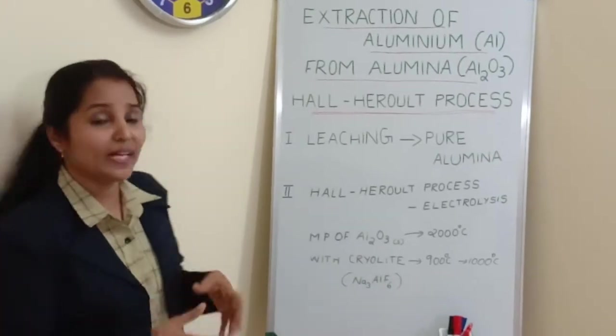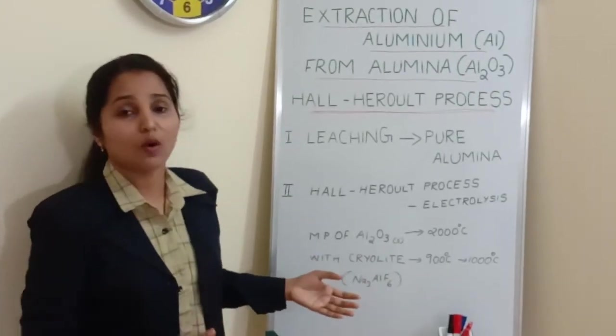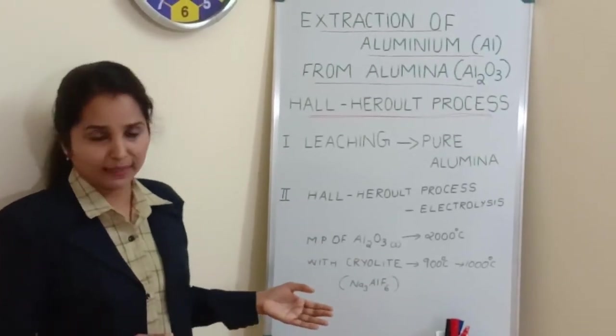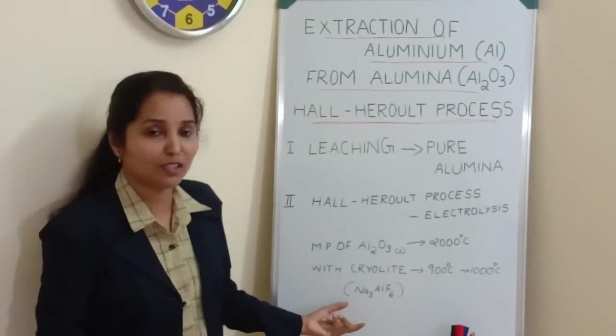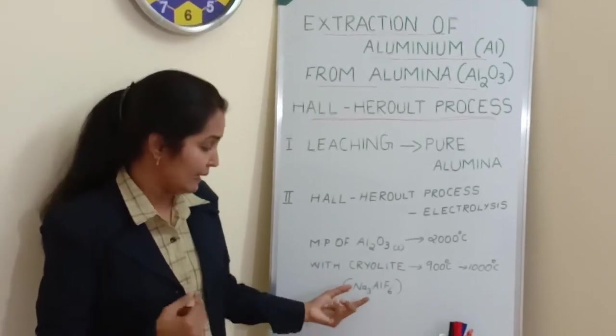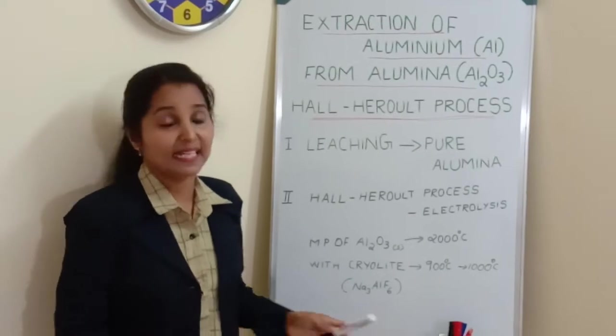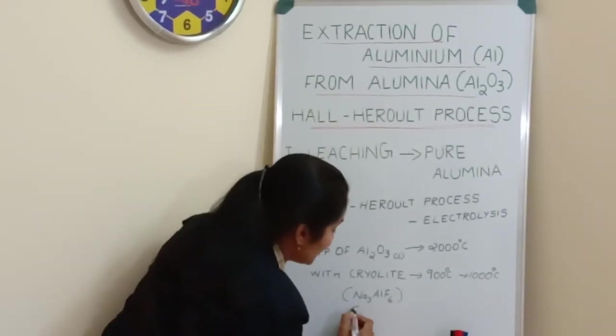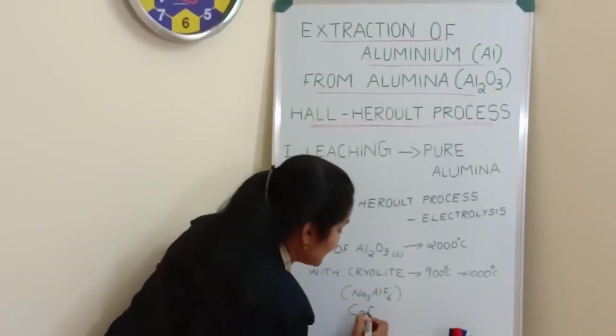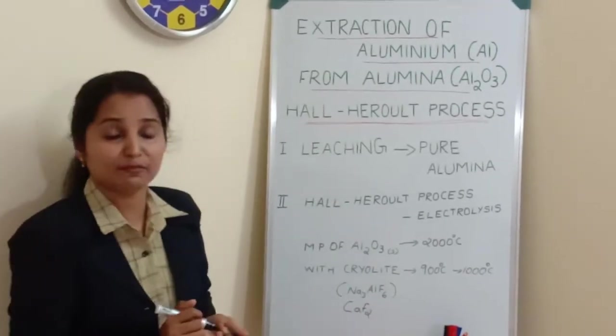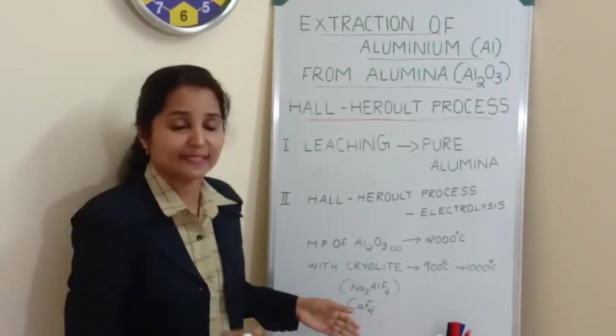So in the case of alumina, we can opt for cryolite or calcium fluoride. Cryolite, its chemical formula is Na3AlF6. Or calcium fluoride, CaF2.